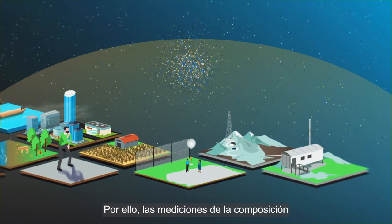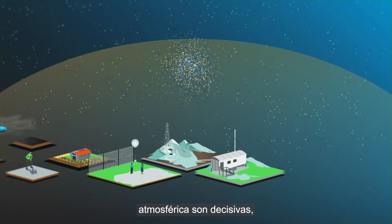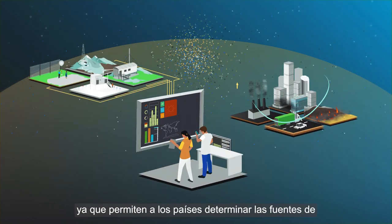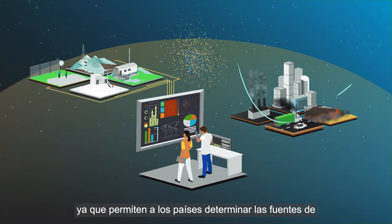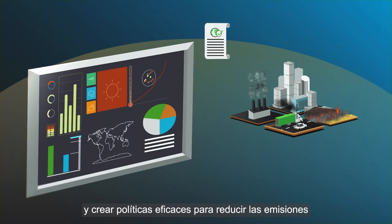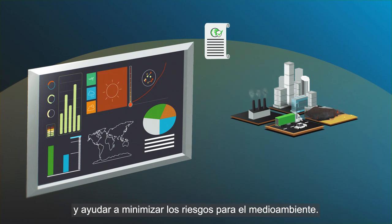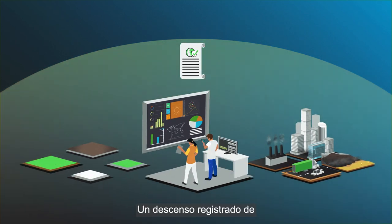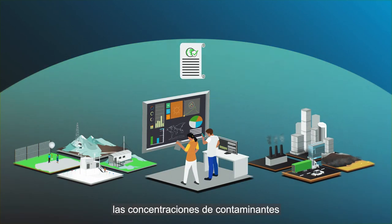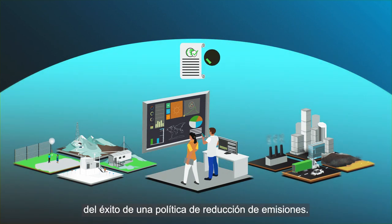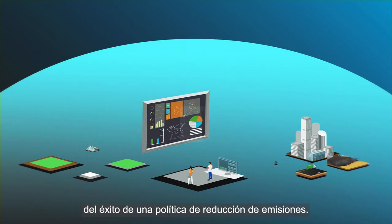Thus, measurements of atmospheric composition have become crucial as they enable countries to identify sources of pollutants and greenhouse gases and to guide effective policies to reduce emissions and help minimise risks to the environment. A measured drop in atmospheric pollutant concentrations is an indicator of a successful policy to reduce emissions.